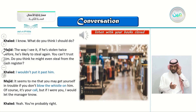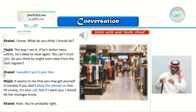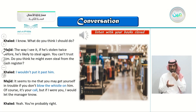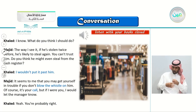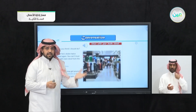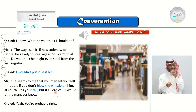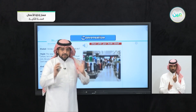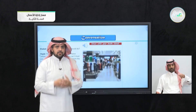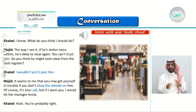Khaled: 'I know. What do you think I should do?' Majid: 'The way I see it, if he's stolen twice before, he's likely to steal again. Do you think he might even steal from the cash register?' Khaled: 'I wouldn't put it past him.' Majid: 'It seems to me that you may get yourself in trouble if you don't blow the whistle on him. Of course, it's your call. But if I were you, I would let the manager know.' Khaled: 'Yeah, you're probably right.' So Majid uses a present hypothetical: 'If I were you, I would let the manager know.'